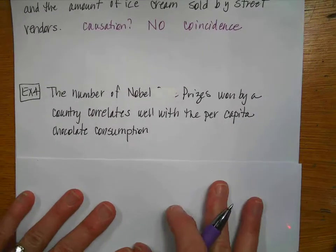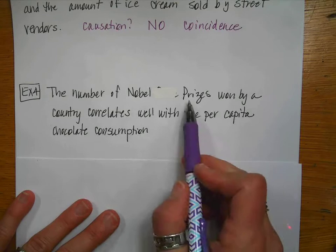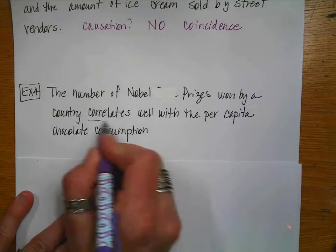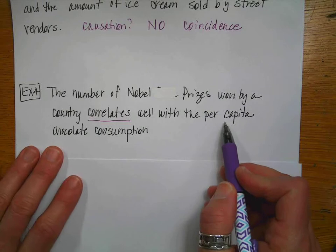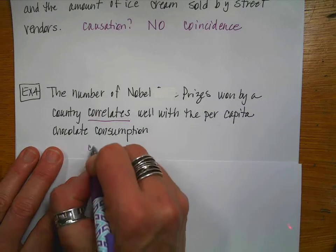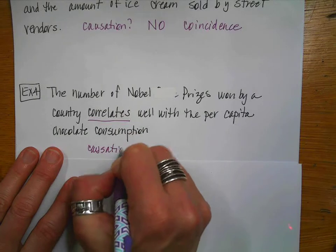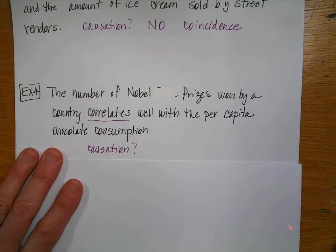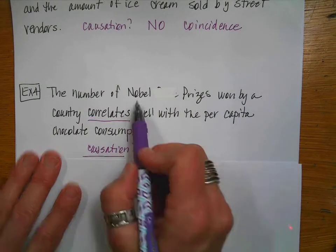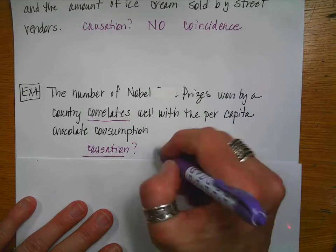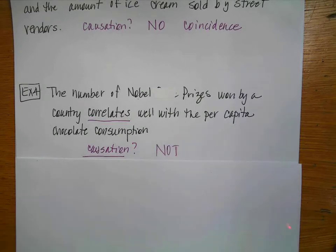The last one that I have is also entertaining. The number of Nobel Prizes won by a country correlates with the per capita chocolate consumption. So again, we're going to ask the question, is there causation? Does the amount of chocolate consumed actually cause the number of Nobel Prizes to increase? Probably not. So you always want to think about could the two variables be causes or are they just related or correlated?